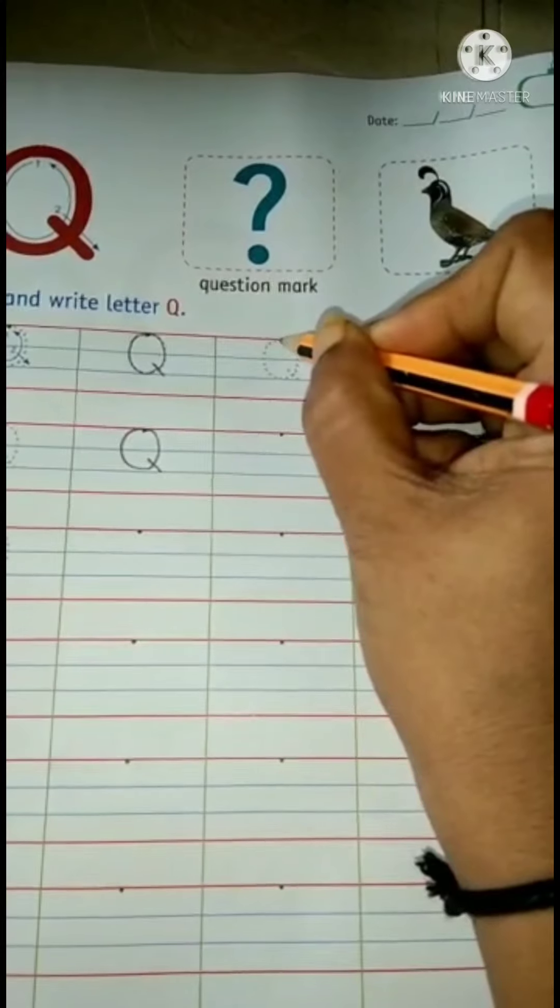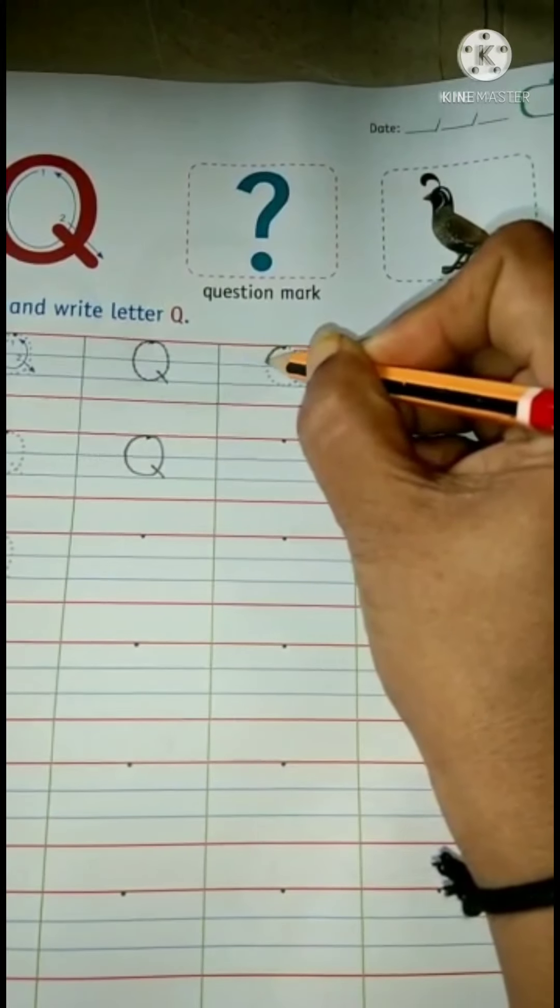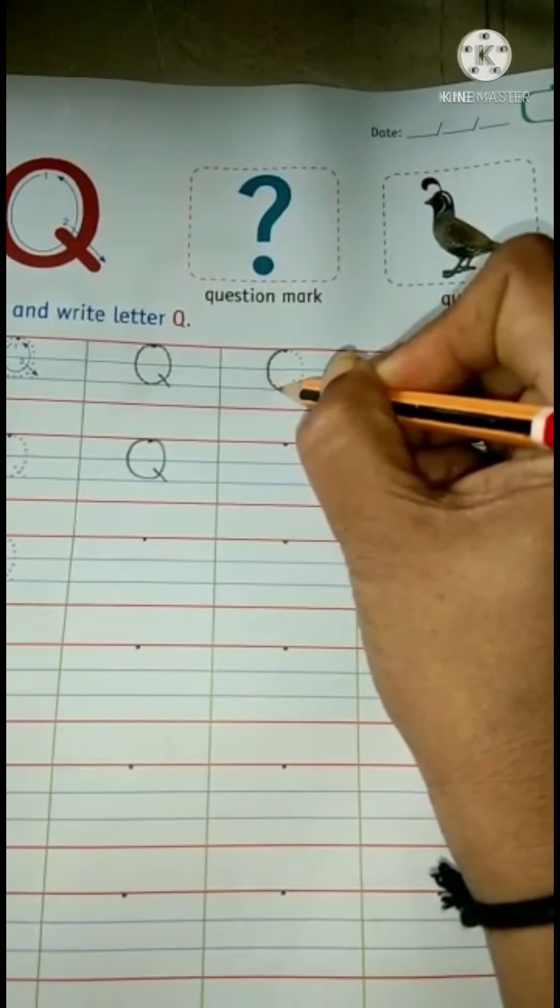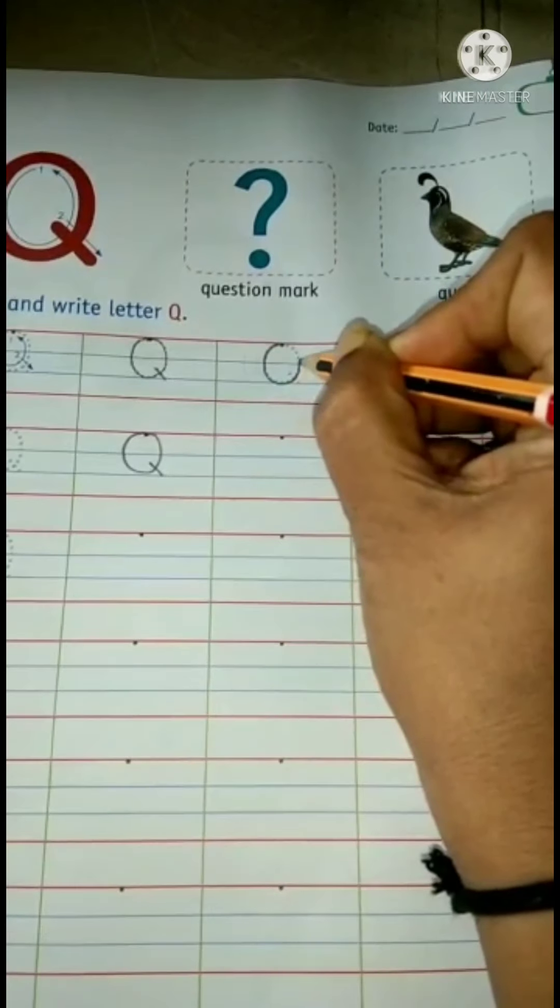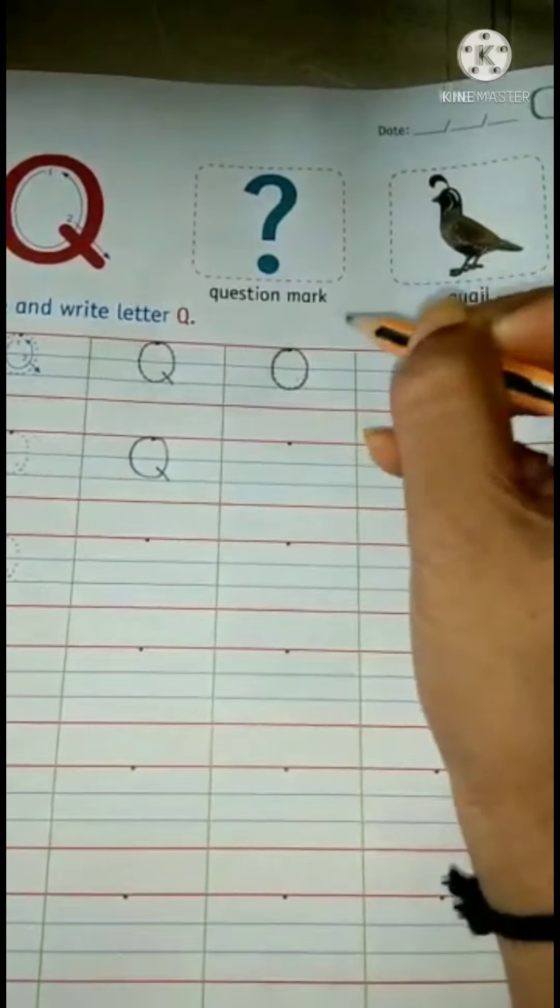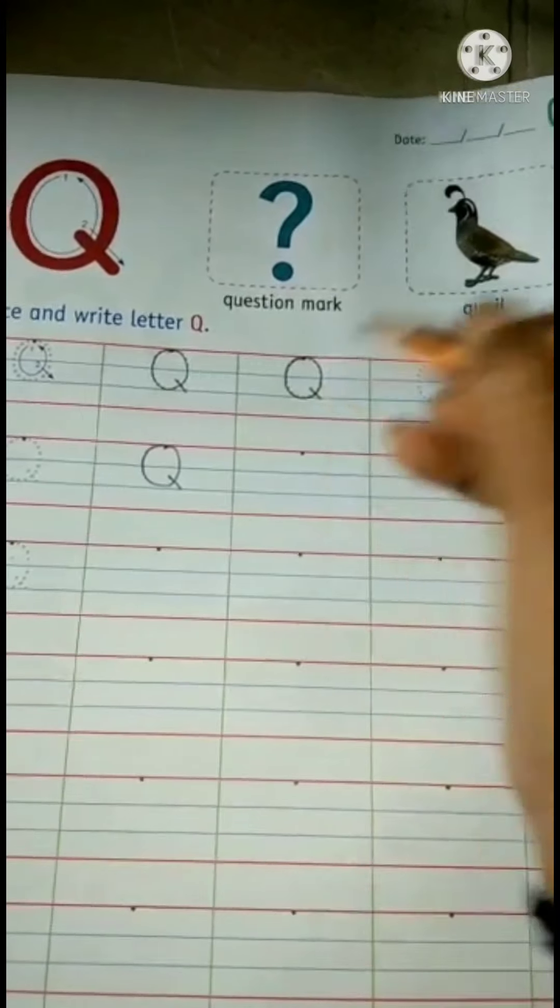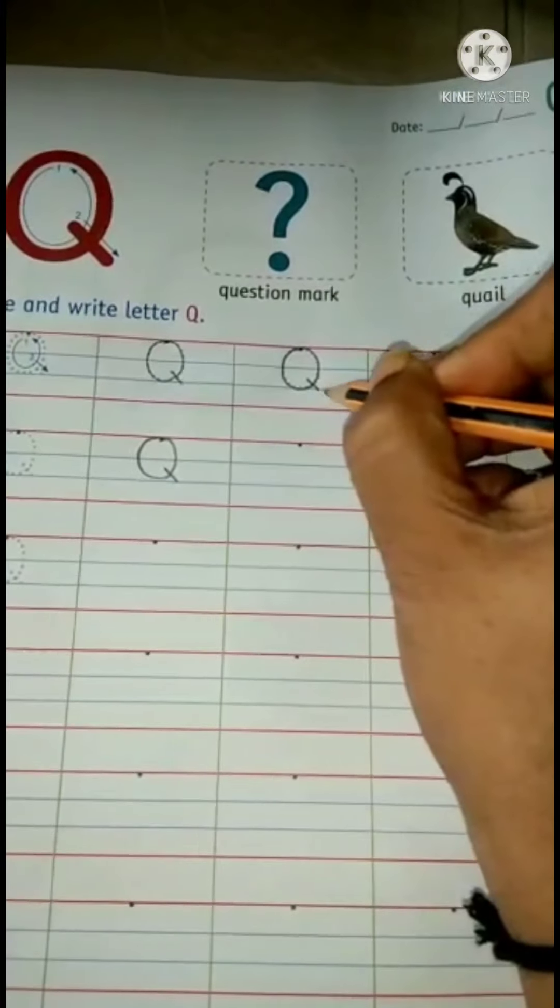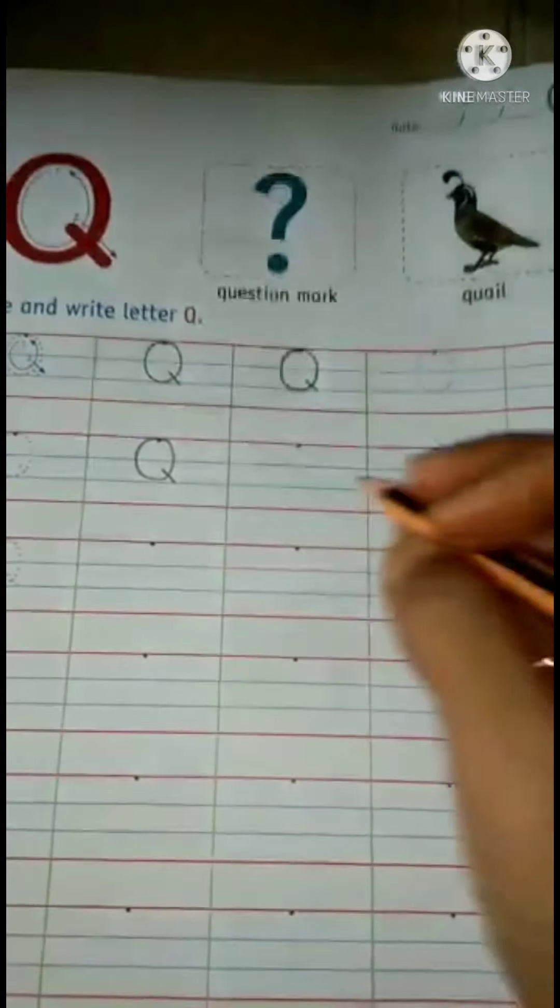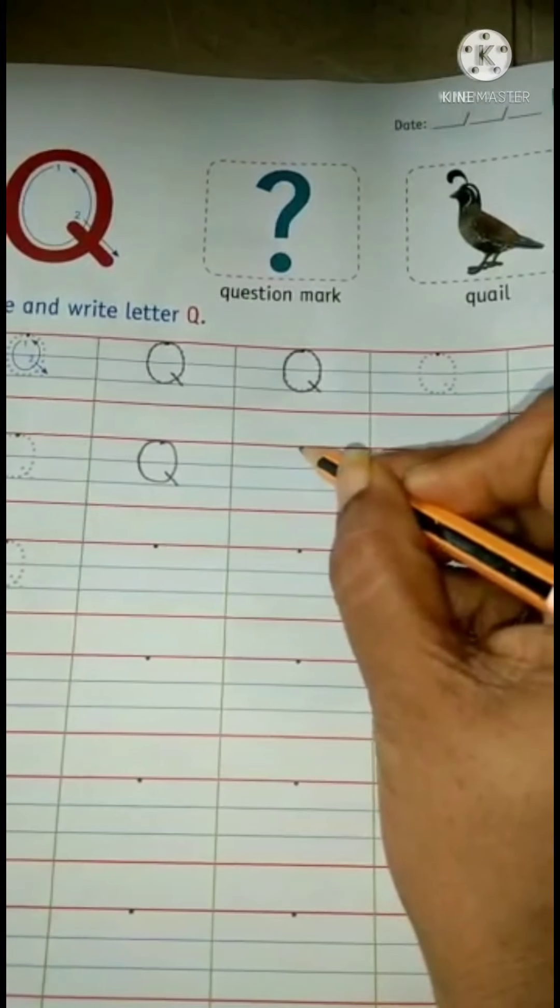See? Start from this dot. In this way, draw one circle and then a small slanting line, but this should not go beyond this blue line. Right? Again.